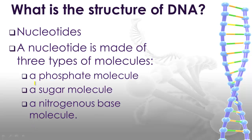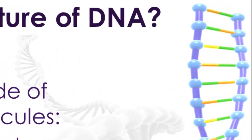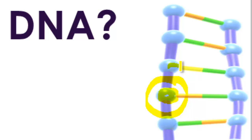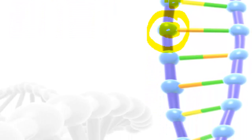The structure of DNA is based on a subunit called the nucleotide. A nucleotide has three types of molecules: a phosphate molecule, a sugar molecule, and a nitrogenous base molecule. The phosphate molecule in this model of DNA is this little circle right here. All of these would represent the phosphate molecules.